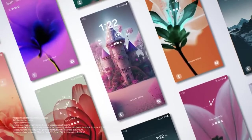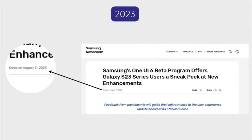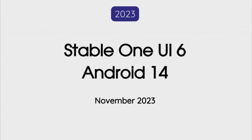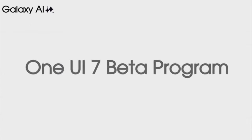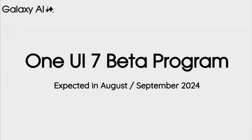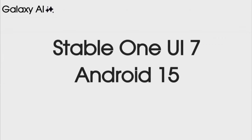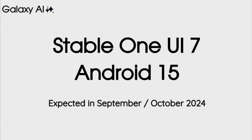Talking about the release date for One UI 7: last year Samsung released the One UI 6 update in August and started the rollout of One UI 6 Android 14 in November — they took two months to release the final stable update. Looking at what Samsung did last year, you can expect to see the beta version of One UI 7 Android 15 sometime in August or September. After the beta release, Samsung will release the stable One UI 7 Android 15 update sometime in September or October.